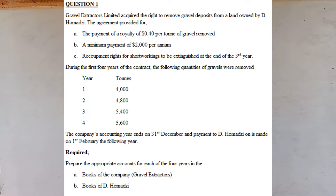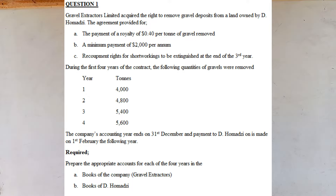The tons extracted each year: Year 1 — 4,000 tons; Year 2 — 4,800 tons; Year 3 — 5,400 tons; Year 4 — 5,600 tons.